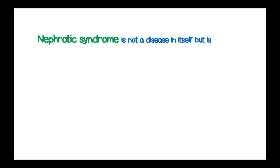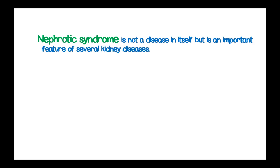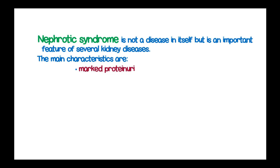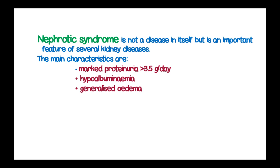Nephrotic syndrome is not a disease by itself but is an important feature of several kidney diseases. The main characteristics of nephrotic syndrome are marked proteinuria, which is more than 3.5 grams per day, hypoalbuminemia, generalized edema, and hyperlipidemia.